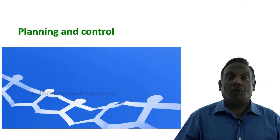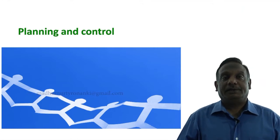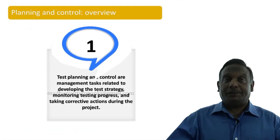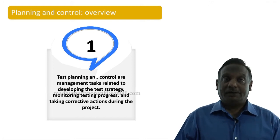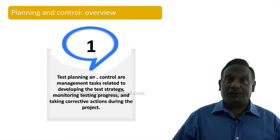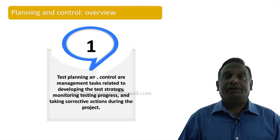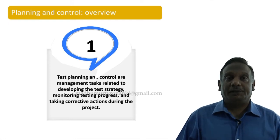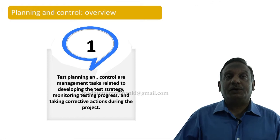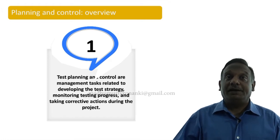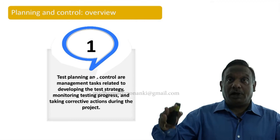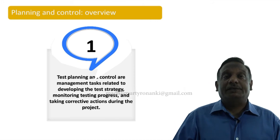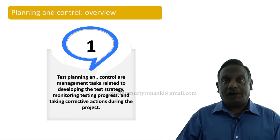We will talk a little bit more elaborately about planning and control activity. The overview of planning and control is: who does planning and control activities in a testing project? The test management. This is a kind of management activity. It is done prior to starting the testing project. Test planning and control are management tasks related to developing the overall test strategy and also monitoring at the time of executing the project.